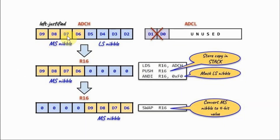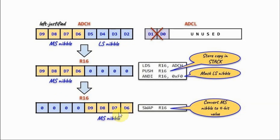To display the most significant nibble as the most significant hexadecimal digit, we start by copying the 8-bit digitized byte from ADCH into register R16 using the LDS instruction. We then push a copy of R16 onto the stack because we will need the digitized value later to process the least significant nibble. Next, we mask the least significant nibble using the AND immediate instruction, then swap the position of the most significant nibble so it becomes a 4-bit number using the swap instruction.